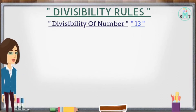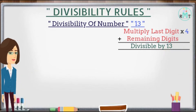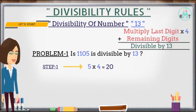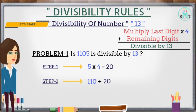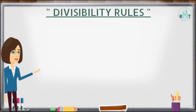Now we will check the divisibility rule for number 13: a number is divisible by 13 if we multiply the last digit by 4, then add the remaining digits. Problem 1: Is 1105 divisible by 13? Step 1: Multiply the last digit 5 by 4 and get 20. Step 2: Add the remaining digits 110 with 20 and get 130. Step 3: Divide 130 by 13 and get 10, which is completely divisible by 13. Hence 1105 is divisible by 13.